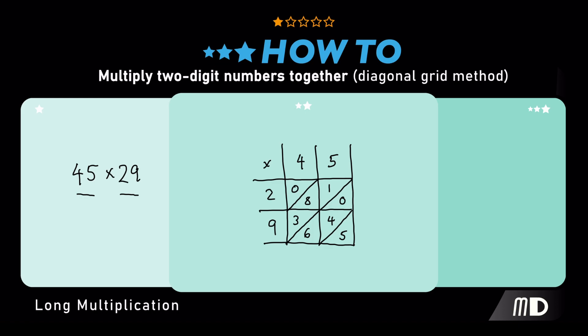So, now the last step is to add the diagonals together. So, beginning with this first diagonal, where there's only a 5, 5 goes at the bottom.